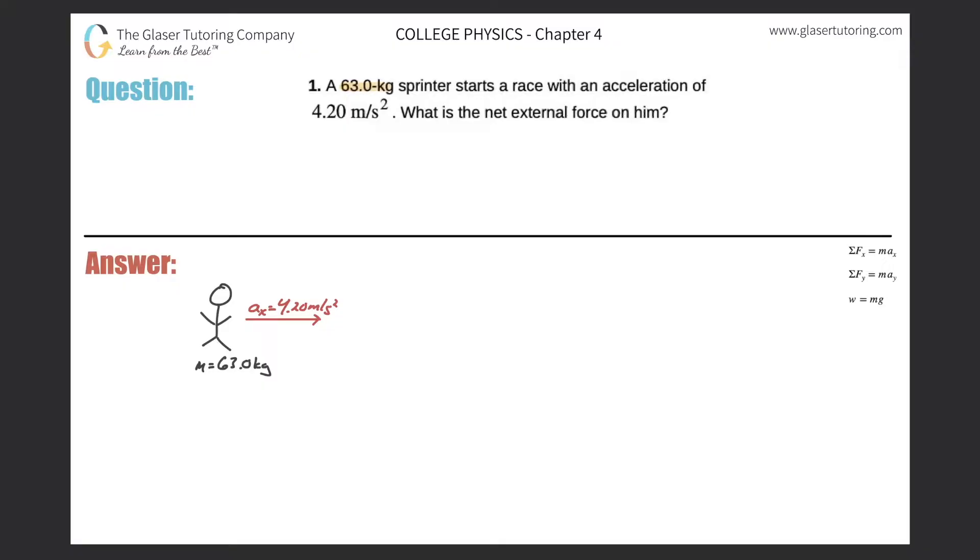Number one, a 63 kilogram sprinter starts a race with an acceleration of 4.2 meters per second squared. What is the net external force on him?